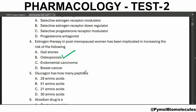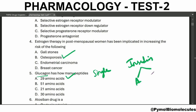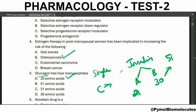Glucagon has how many peptides? Glucagon has a single chain containing 29 amino acids. Insulin has two chains — chain A and chain B. Chain A contains 21 amino acids and chain B contains 30 amino acids, so totally insulin has 51 amino acids. There is also a connecting peptide that is disconnected during insulin synthesis, and it contains 35 amino acids.